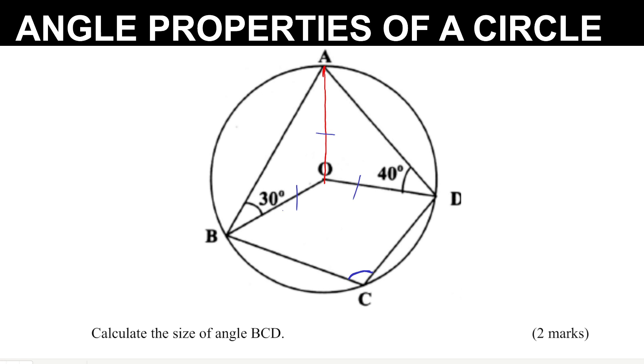This is the radius, this is the radius, this is the radius. They are equal, they are forming isosceles triangles, and the base angles of an isosceles triangle are equal. So if this angle is 30, therefore this one should be 30 degrees. If this is 40, this angle should be 40.